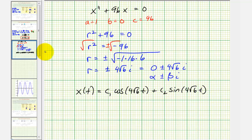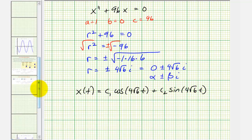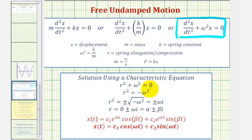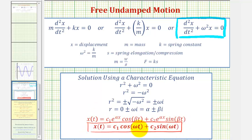Sometimes you'll see the solution written directly as x of t equals c sub 1 cosine(omega t) plus c sub 2 sine(omega t) without showing the characteristic equation work. If we use the form of the differential equation with omega squared, the characteristic equation gives solutions plus or minus omega i, and we can shorten our work by using this general solution form directly for free undamped motion. I do like showing the work each time, though.